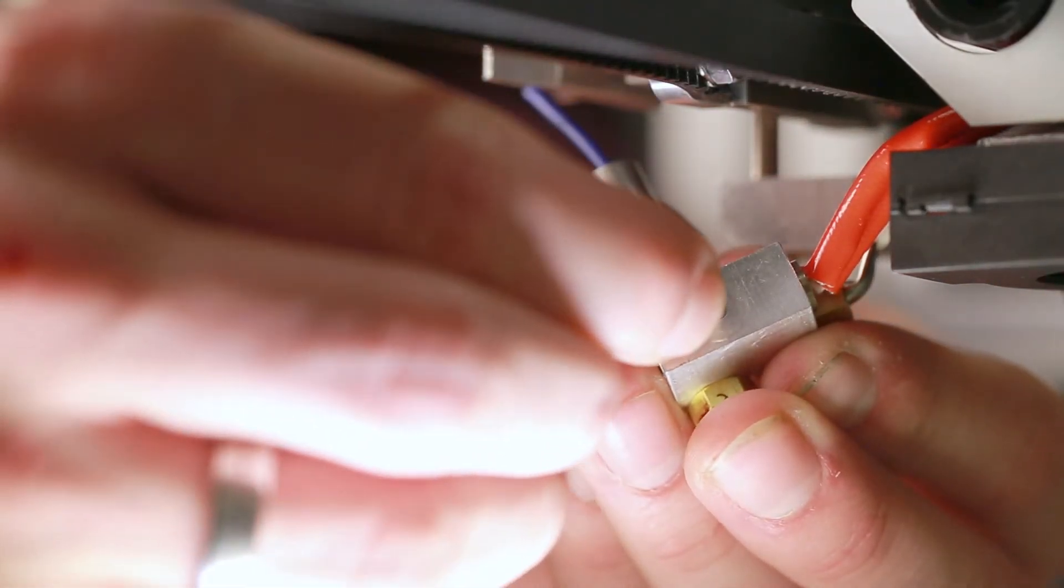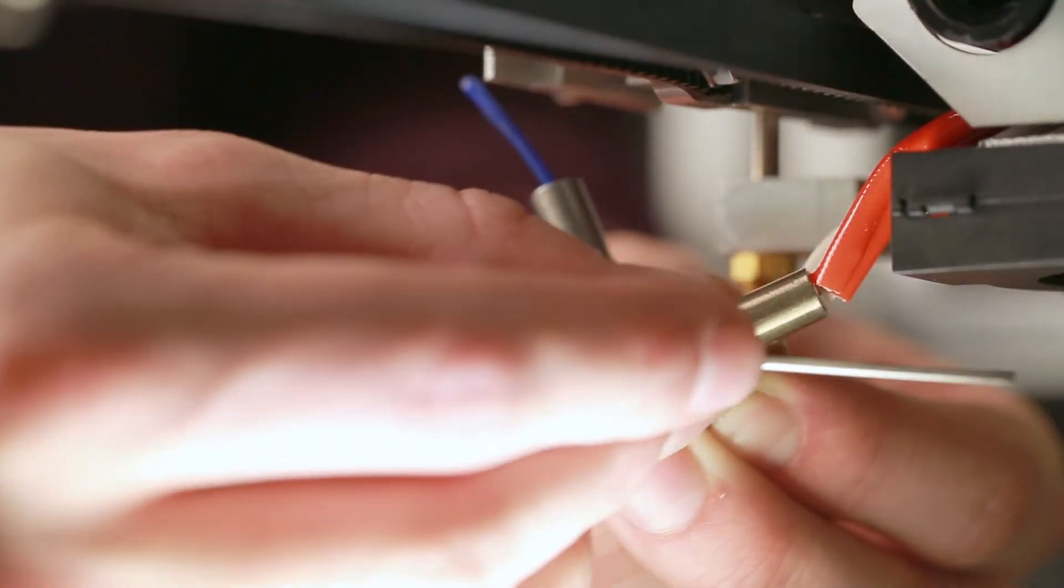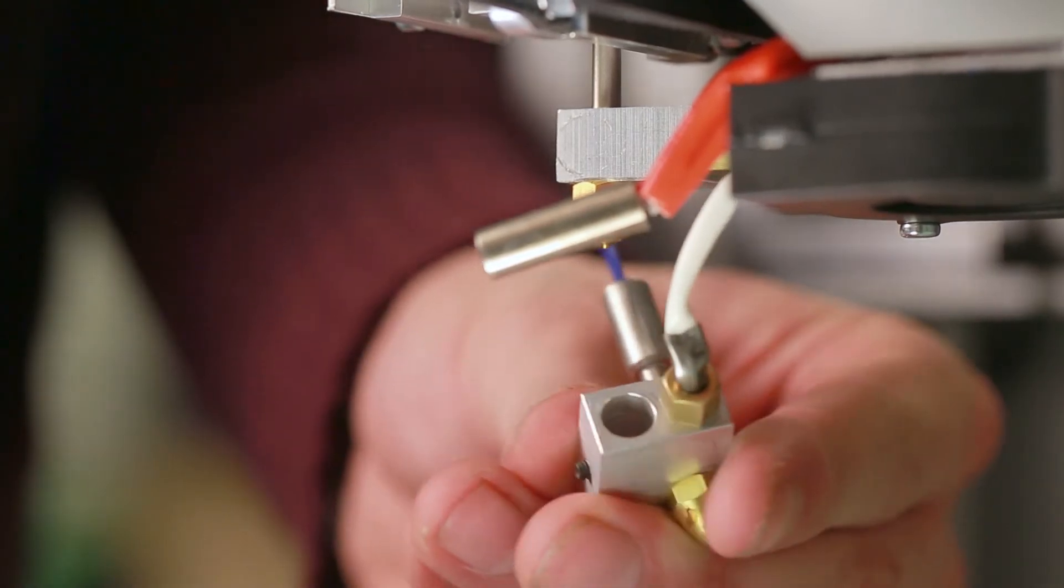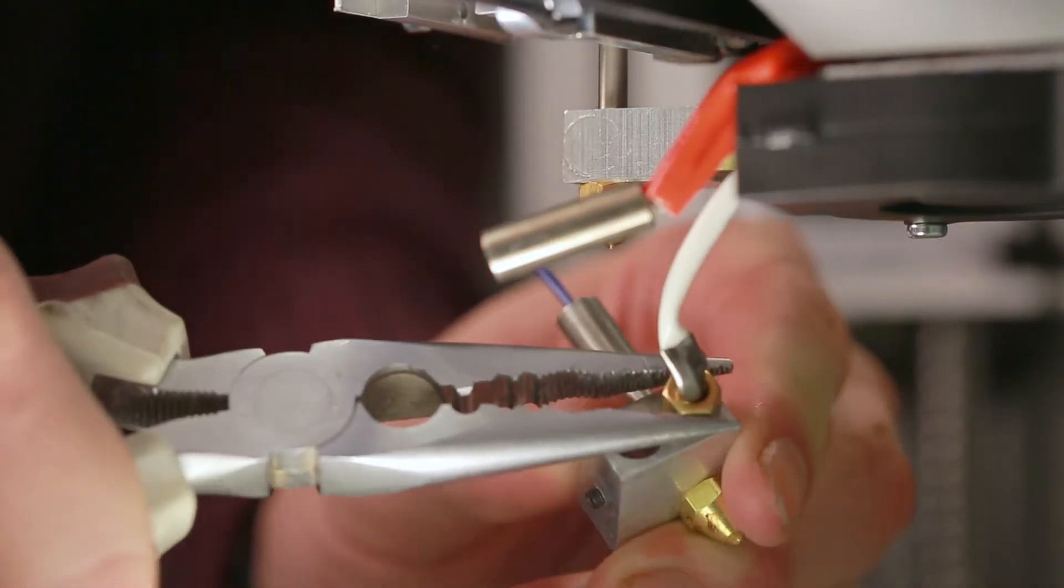Unscrew the set screw of the heating cartridge with an allen wrench and remove the cartridge. Finally, unscrew the thermoresistor from the heating block. Best to use pliers.